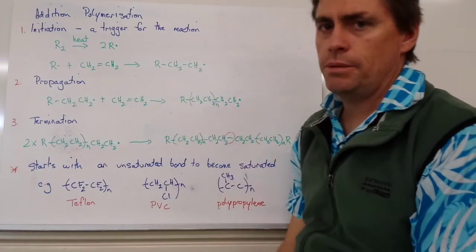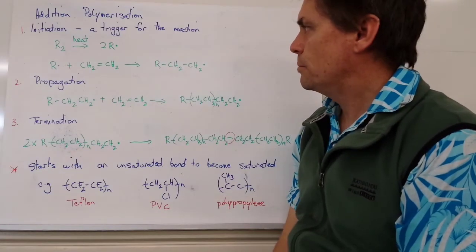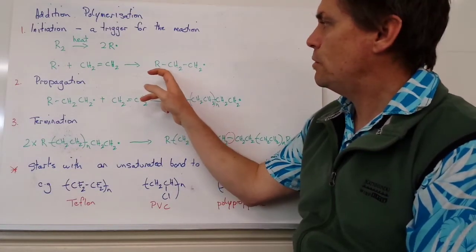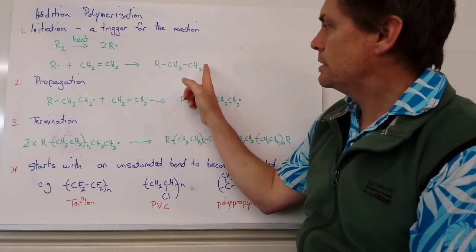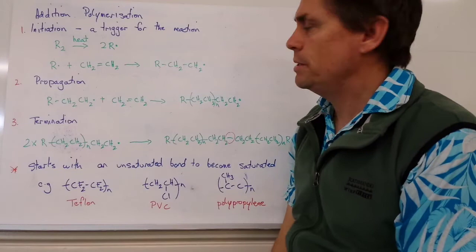And that means that this end will now be more reactive in the process. So we've got quite a tight bond between our carbon and radical. But this end is now free to bond as well because it's radical.